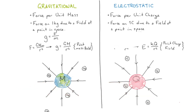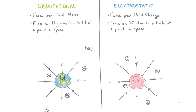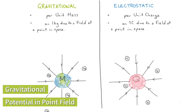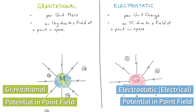Remember field strength: for gravitational, it was the force per unit mass, and for electrostatics, field strength was the force per unit charge. Now very similarly, gravitational potential is the potential energy per unit mass — or the potential energy on one kilogram at any point in space — and for electrostatics it's the potential energy on one coulomb due to a field at any point in space.